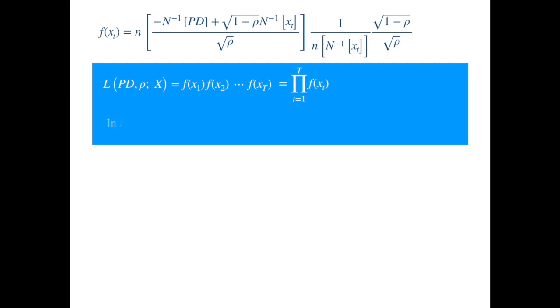Taking log of both sides we get the log likelihood function, which one maximizes with respect to the parameters to get the maximum likelihood estimates. Notice the log of the product of the terms is just the sum of their individual logs.